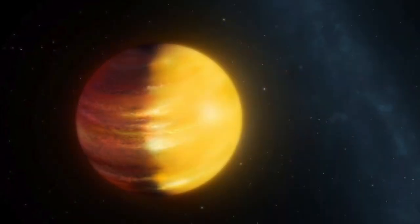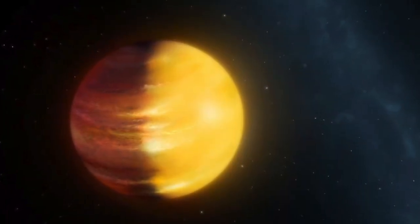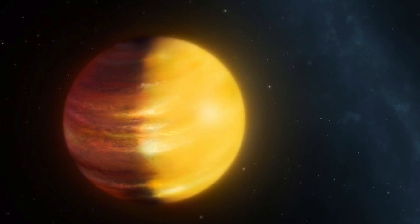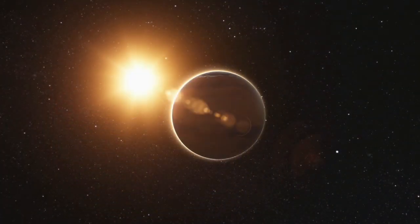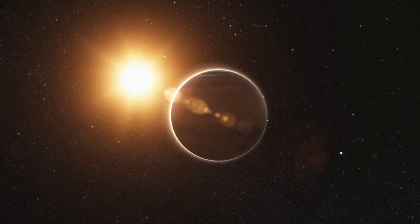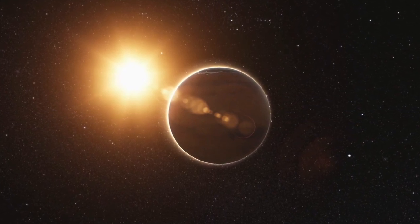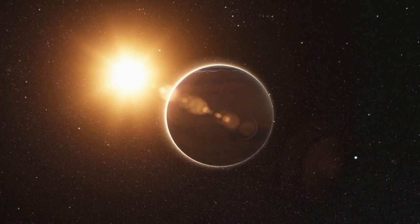The Caltech scientists believe that Planet 9 may have a mass around 10 times that of Earth, and be similar in size to Uranus or Neptune. The predicted orbit is around 20 times farther from our sun on average than Neptune, which orbits the sun at an average distance of 2.8 billion miles.